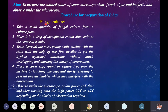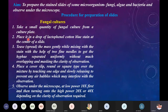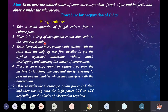Now coming to the procedure for preparation of the slides. If you are going to do microscopic observation of a fungal culture, first we take a small quantity of the fungal culture from a culture plate. Then you take a glass slide; to the center of the glass slide we are supposed to place one drop of dye. The dye we are going to use is lactophenol cotton blue stain.